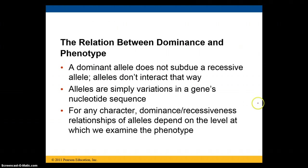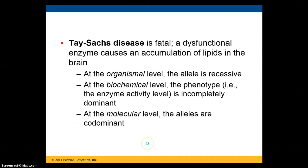The dominance or recessiveness relationship of alleles depends on the level at which we examine the phenotype. For example, with Tay-Sachs disease — a fatal disease caused by a dysfunctional enzyme that leads to lipid accumulation in the brain — at the organismal level the allele is recessive, but at the biochemical level the phenotype is completely dominant, and at the molecular level the alleles are co-dominant.